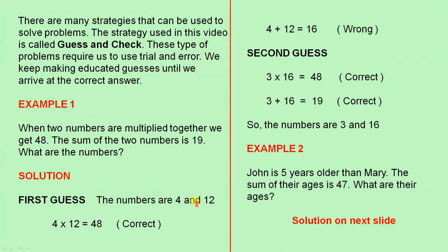Here's our solution. For our first guess, let's guess that the numbers are 4 and 12. Let's do some checking. 4 times 12 is 48, that's correct from what the problem says. 4 plus 12 is 16, that's wrong because the sum of the numbers has to be 19.